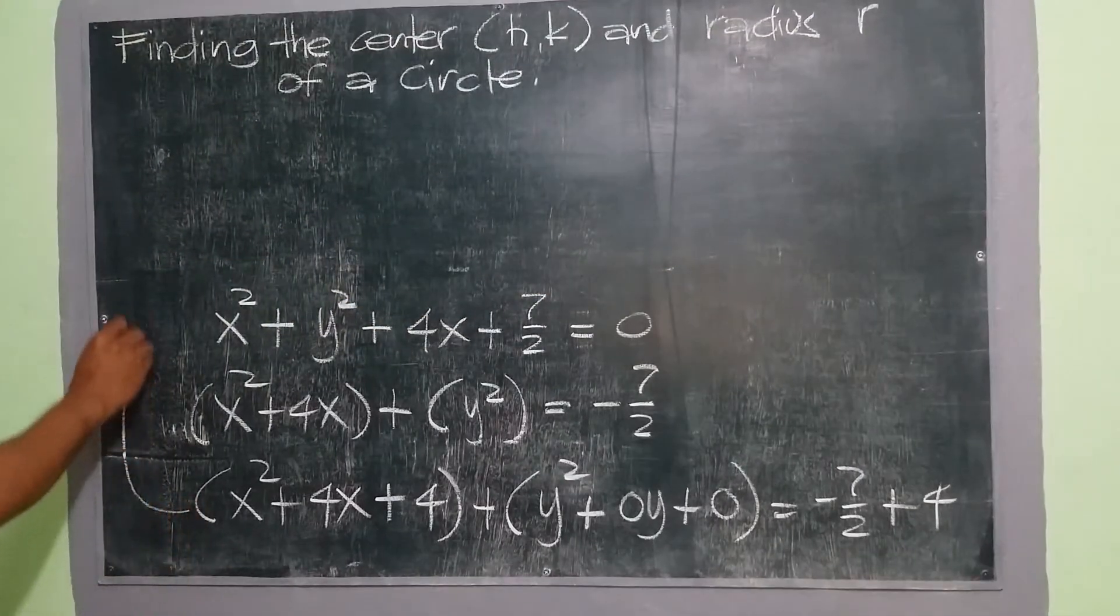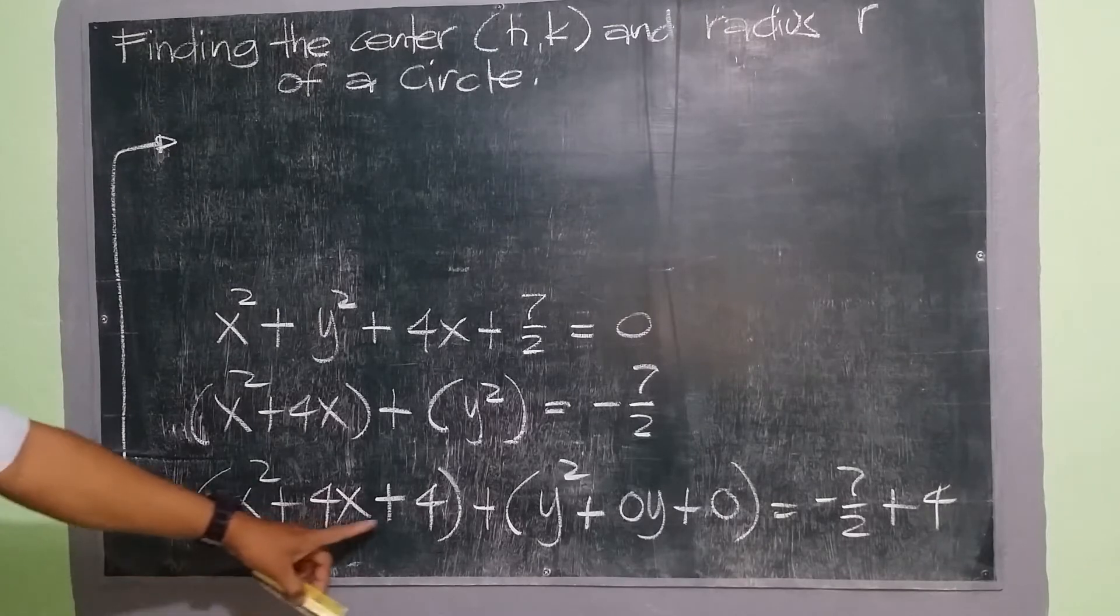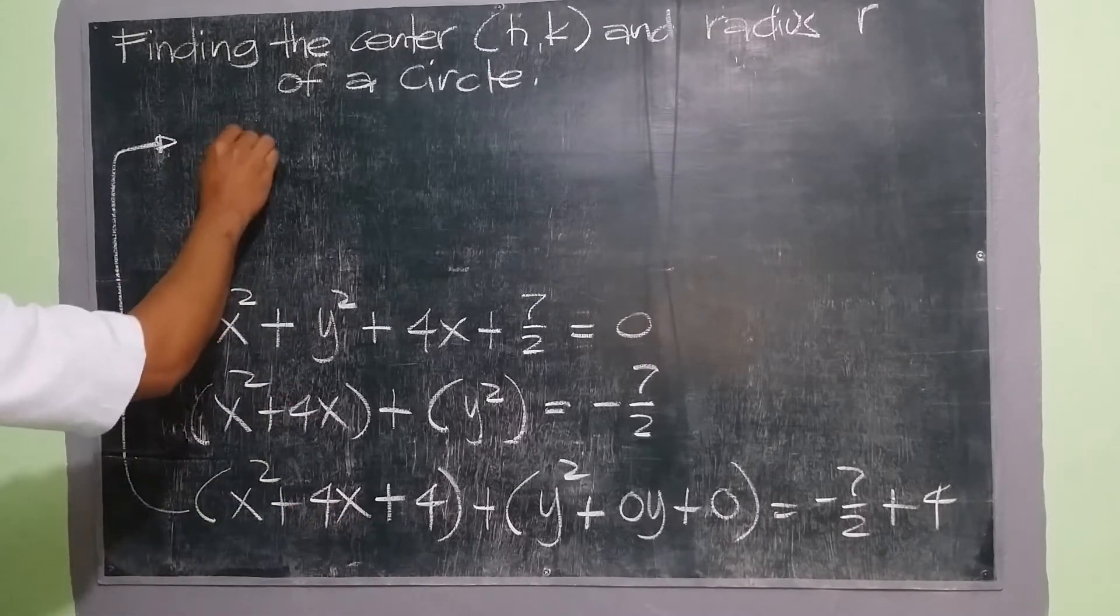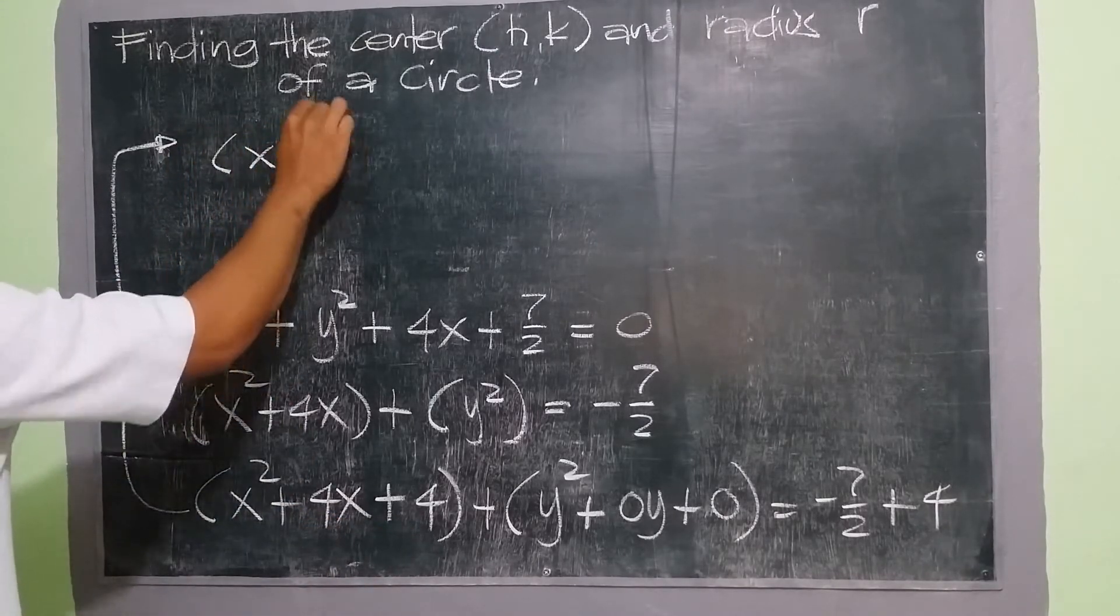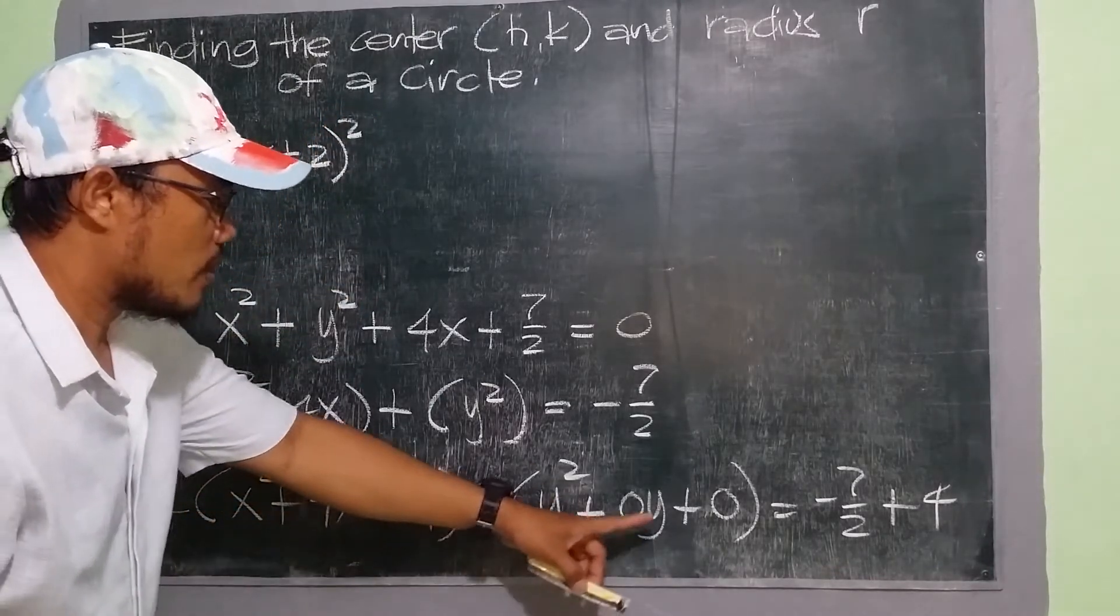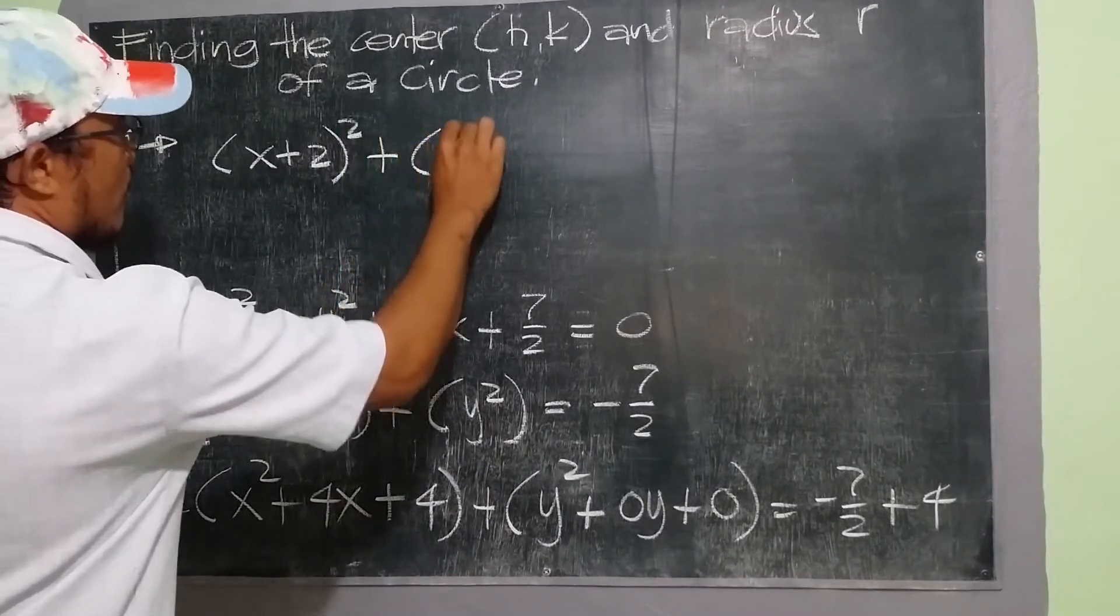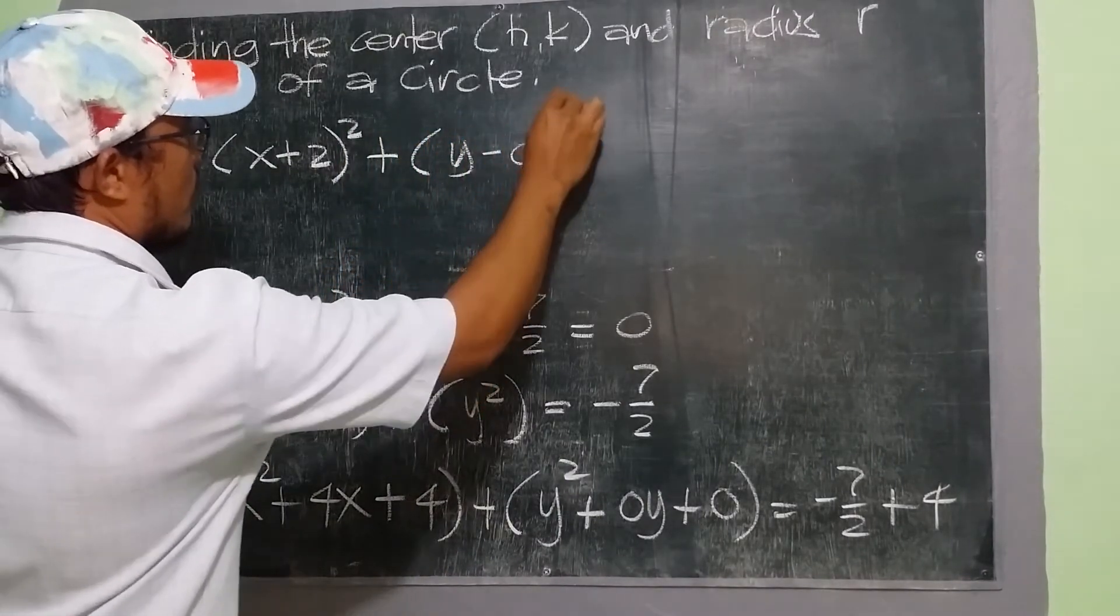From here, so we'll join above. The factor of x squared plus 4x plus 4 will be x plus 2, and then squared. The factor of y squared plus 0y plus 0 is we have plus y minus 0, and then we have squared.